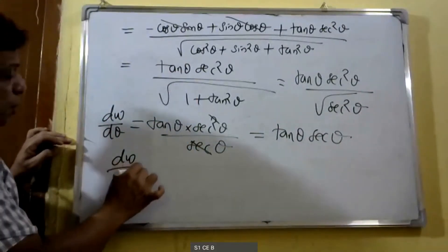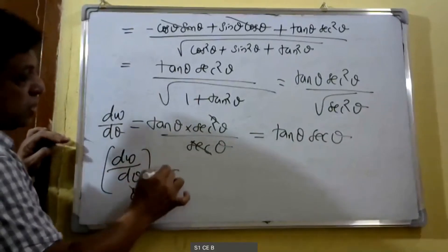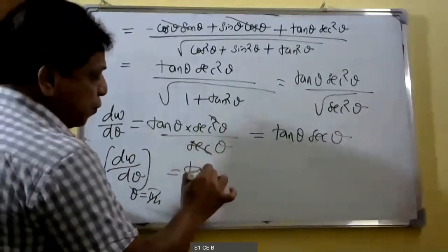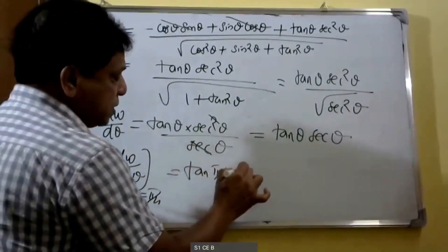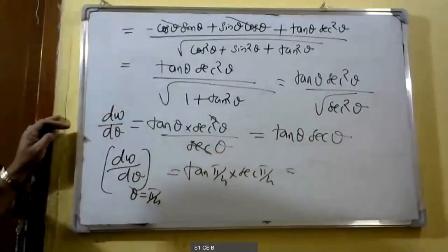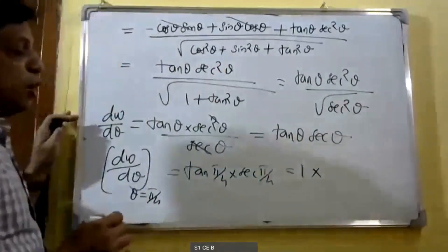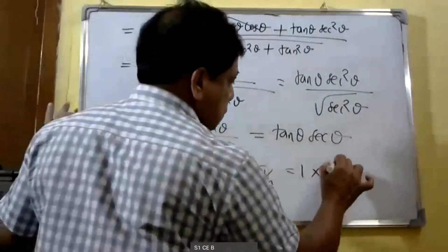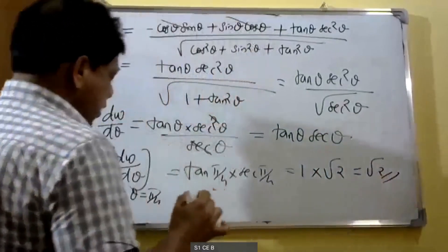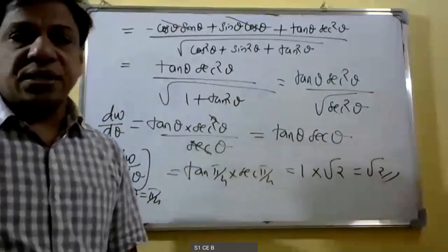Then dw/dθ at θ = π/4: we substitute θ = π/4, giving tan(π/4)·sec(π/4). tan(π/4) = 1, and sec(π/4) = √2. Therefore the final answer is dw/dθ at θ = π/4 = √2.